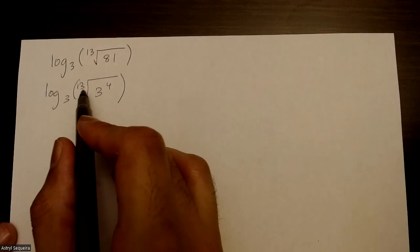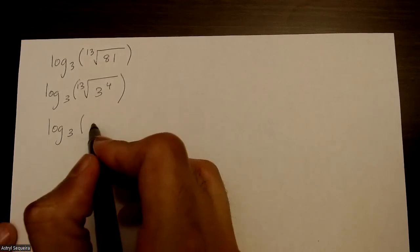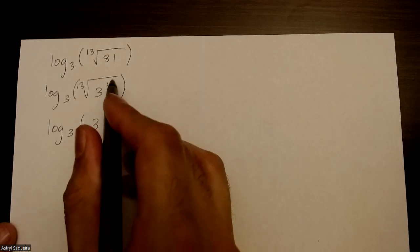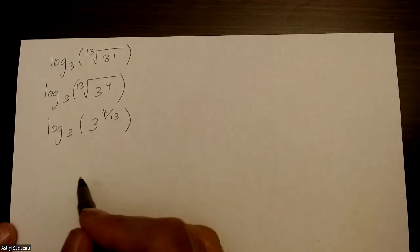And then I can get rid of this 13th root by turning it into an exponent. So that's just 3 to the power of 4 divided by 13. The number just goes to the denominator of the exponent.